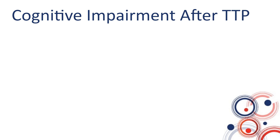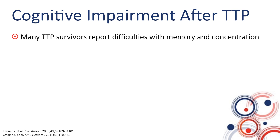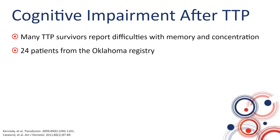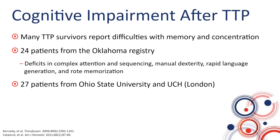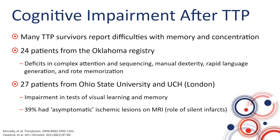Cognitive impairment has garnered significant attention for TTP survivors. Many patients after recovering from TTP report significant difficulties with memory and concentration — often described as brain fog. In 24 patients from the Oklahoma Registry, neurocognitive evaluation revealed deficits in complex attention and sequencing, manual dexterity, and rapid language generation and memorization. In another study of 27 patients from Ohio State and London, patients showed impairments in visual learning and memory, and 39% had evidence of ischemic lesions on MRI despite being otherwise neurologically asymptomatic, highlighting a potential role of silent infarction.